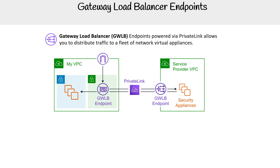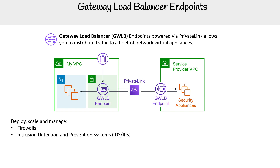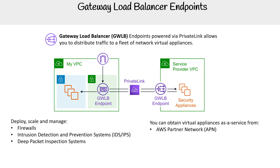It allows you to use third-party appliances, whether you deploy your own or use one provided by a third-party provider. You can deploy, scale, and manage firewalls, intrusion detection and prevention systems, and deep packet inspection systems. Virtual appliances can be obtained as a service from the AWS Partner Network (APN) or the AWS Marketplace.